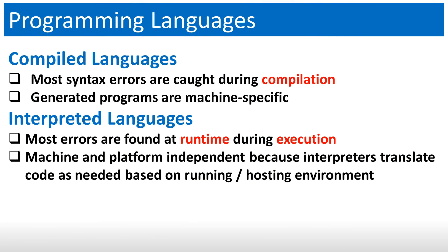The last topic is the difference between compiled languages and interpreted languages. Compiled languages require a compilation process before you run the program. During compilation, the compiler tries to find any syntax errors or code problems, and it will not compile successfully until you fix all of them. The nice thing about compiled languages is that you know ahead of time what errors you have, and the compiler can generate machine-specific code.